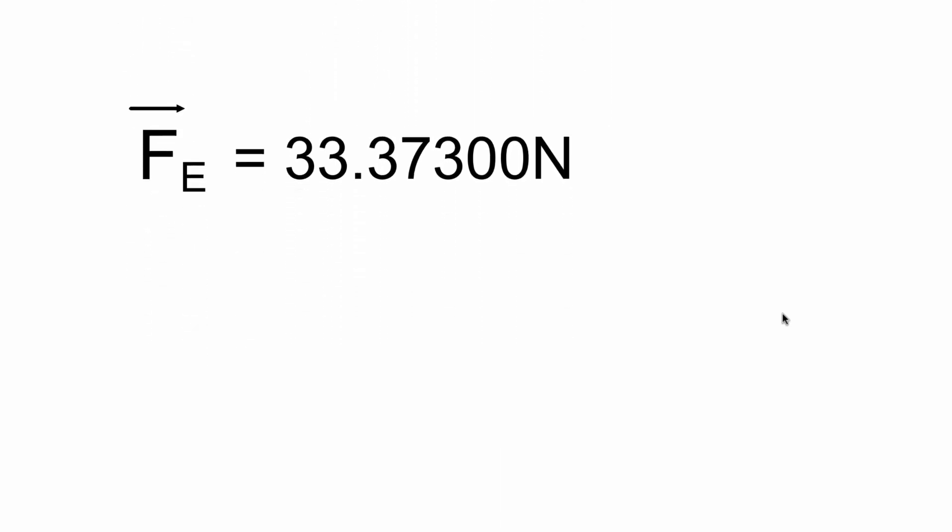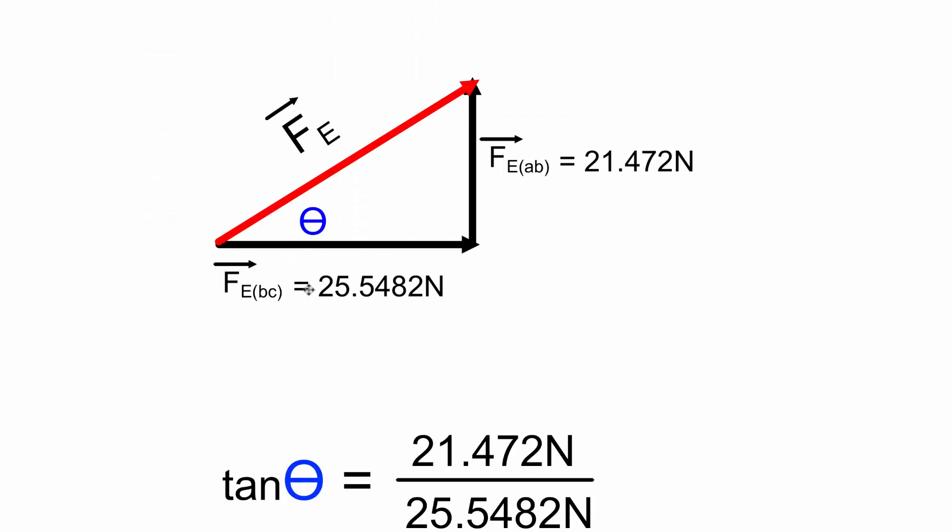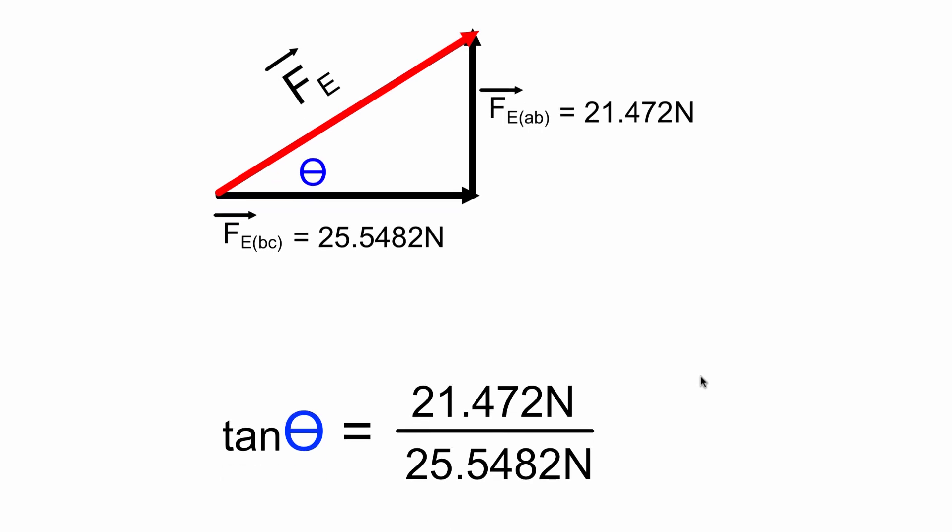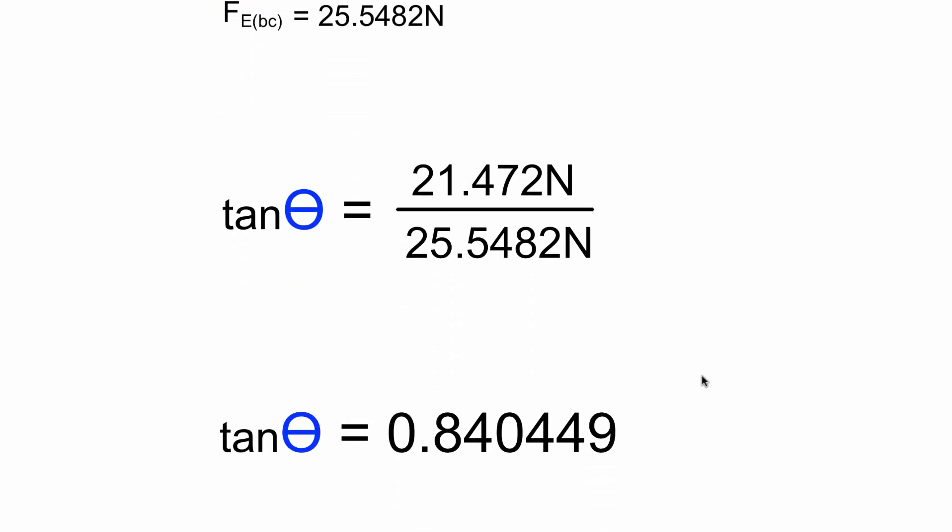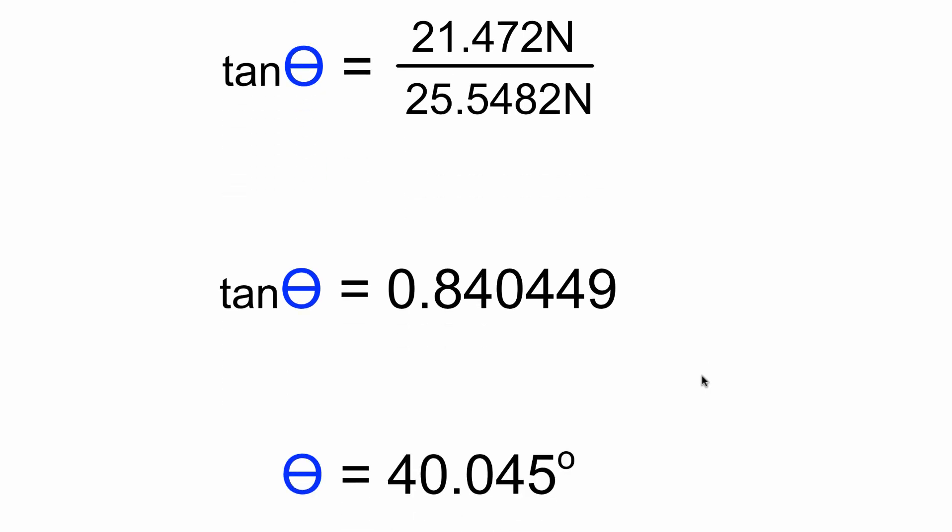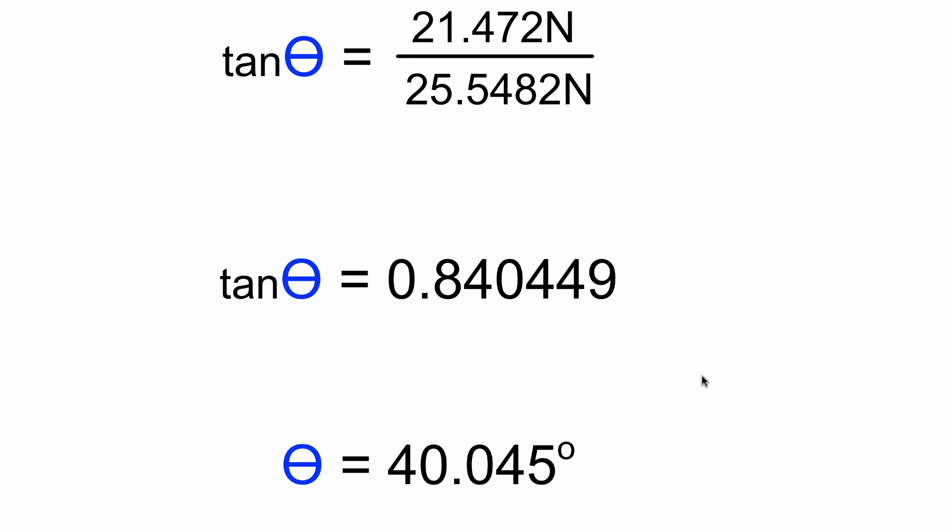We now need to find the angle. Here is our triangle. We had an x component of 25.5482 newtons towards the right, 21.472 newtons up. Here's the angle I want to find. This is opposite over adjacent. Tan theta is 21.472 newtons divided by 25.5482 newtons. Tan theta is 0.840449.